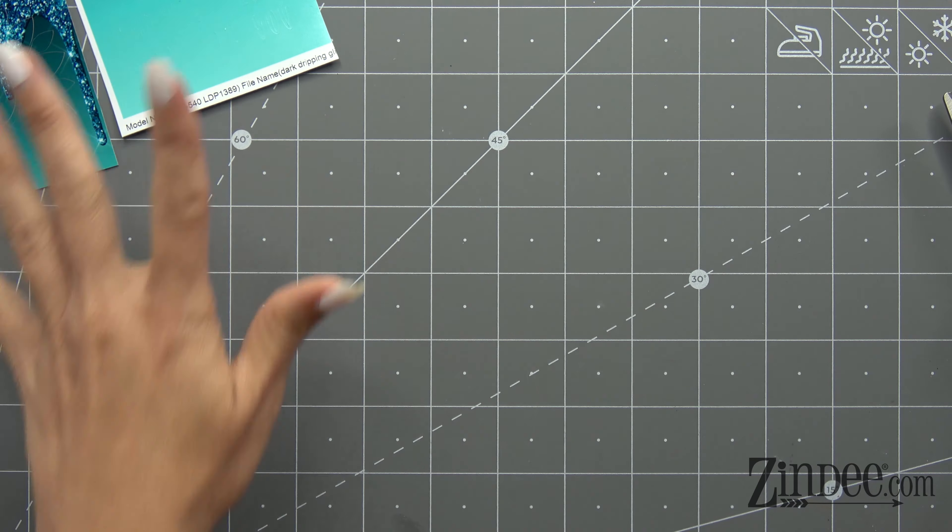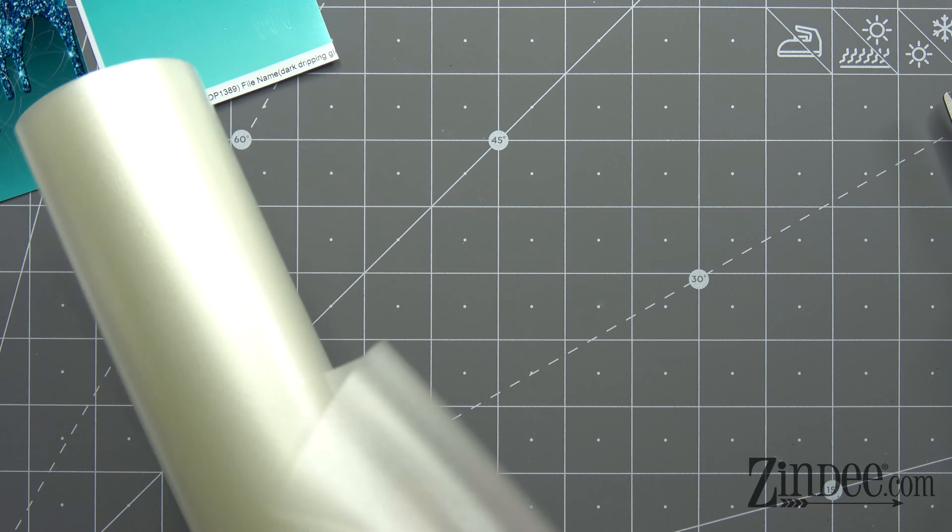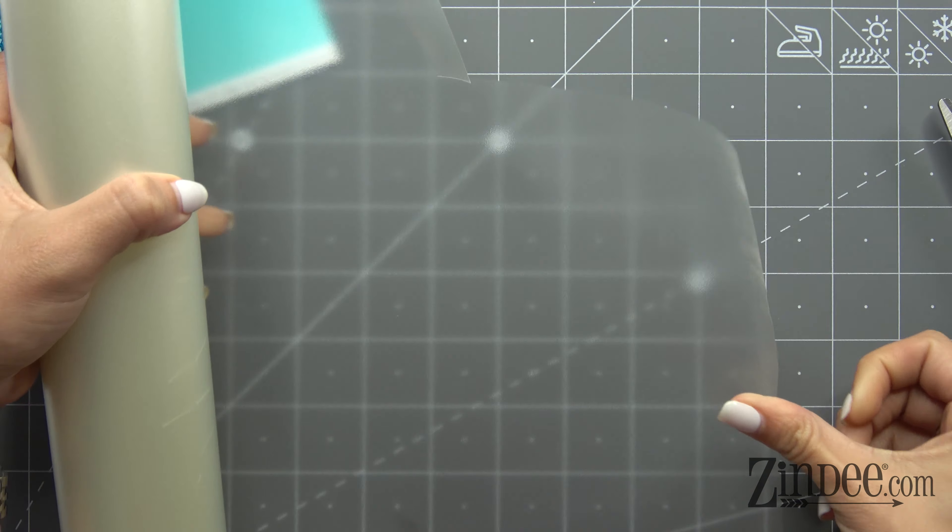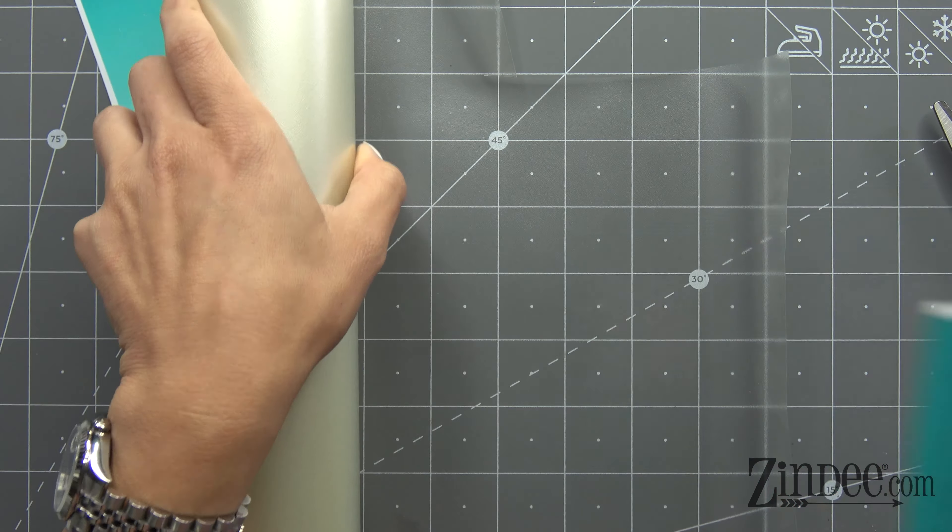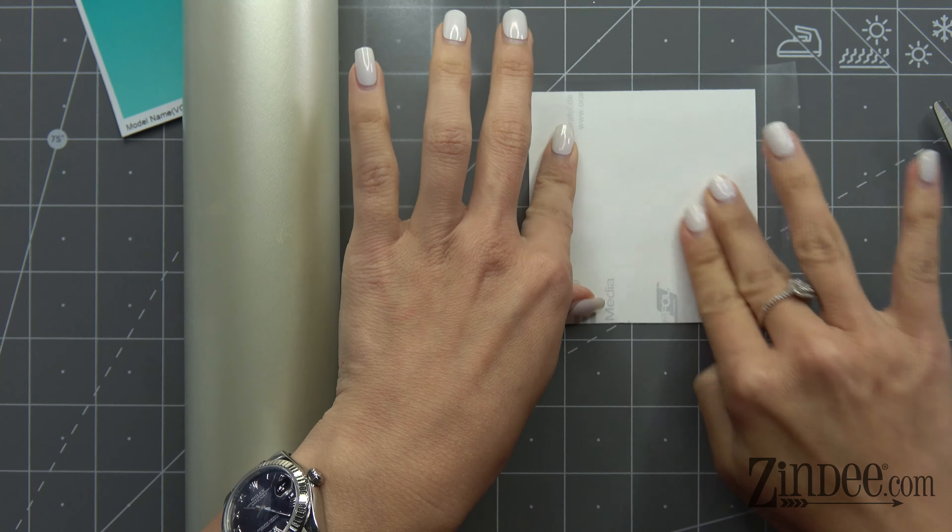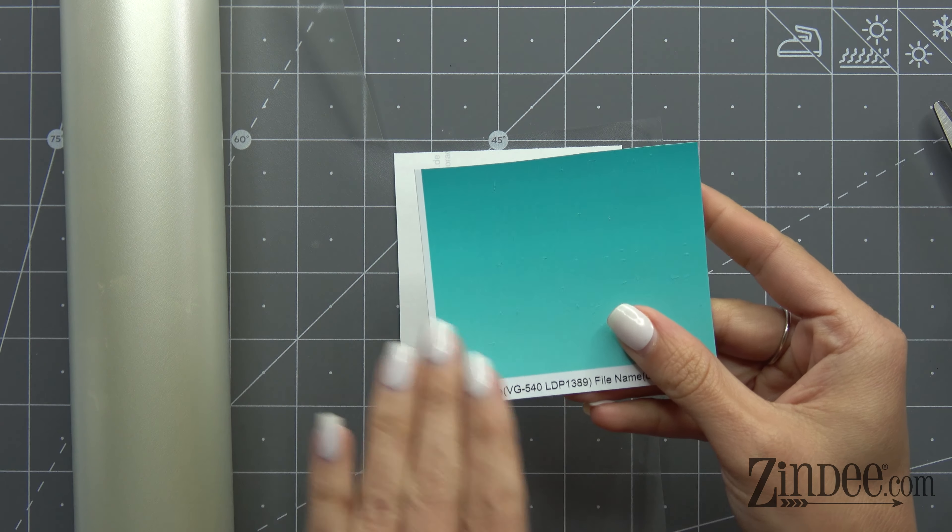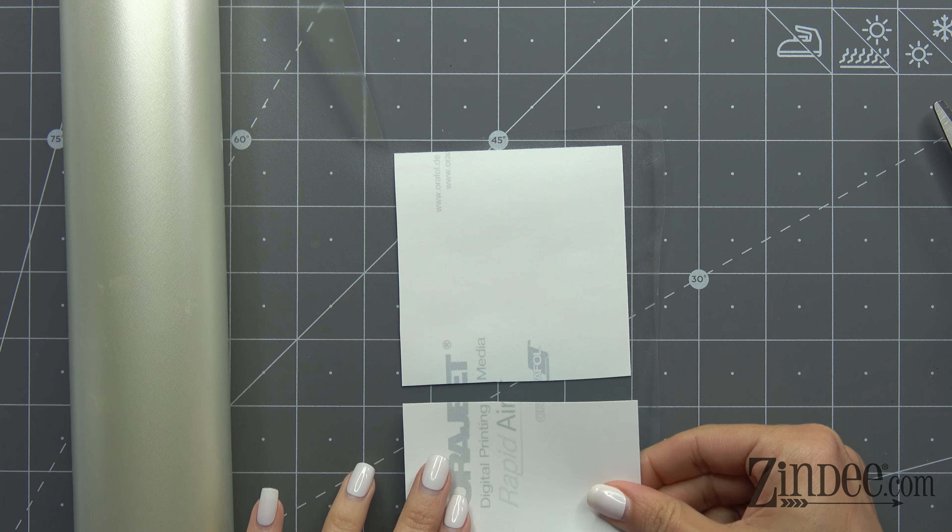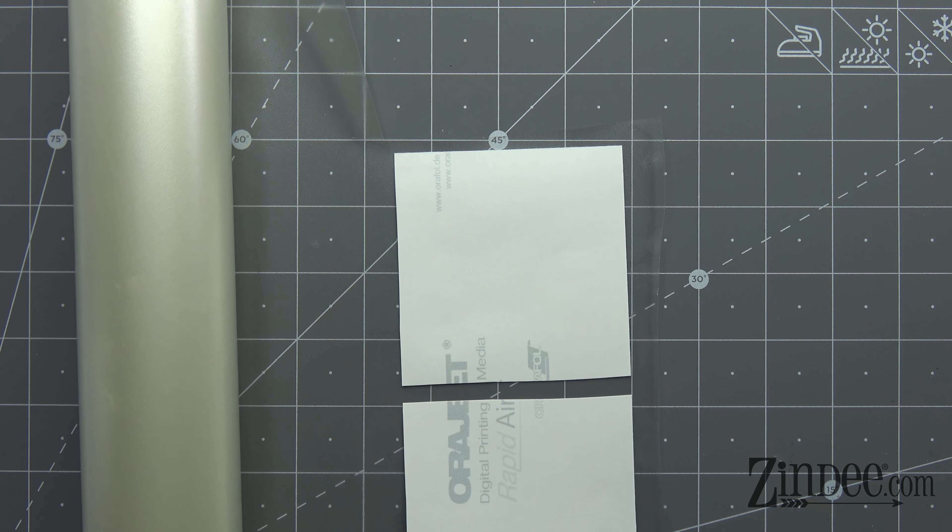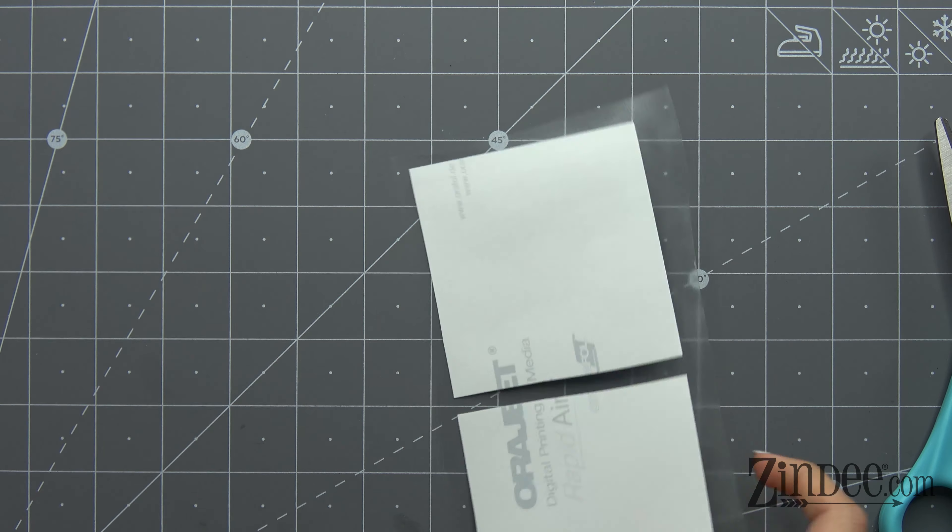After you cut your vinyl, you're going to get your transfer tape and roll some out. This is our StyleTech transfer tape that's available on the website. Then we're just going to put our whole decal with the backing and everything face down onto our transfer tape. Cut that off.